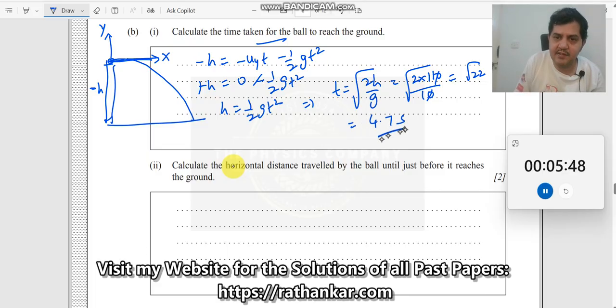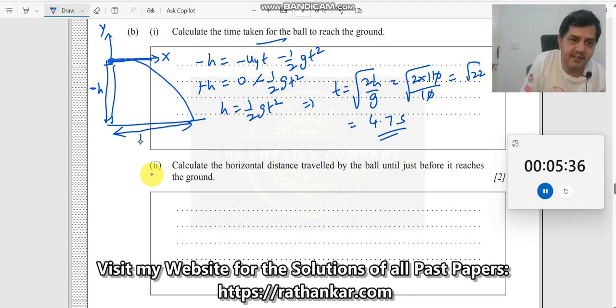Thus the ball takes a time of 4.7 seconds to reach the ground. Next, calculate the horizontal distance moved by the ball until it reaches the ground. Which means what he is asking is what is this distance.